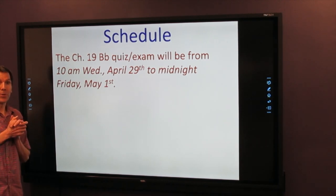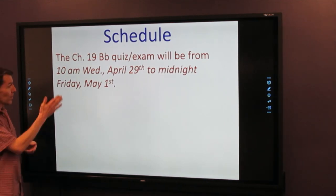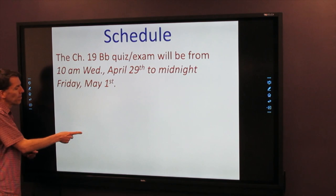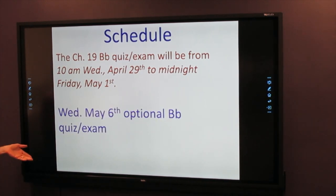You can come to office hours on Thursday evening at 7, Friday morning at 9, and that's the last regular day of the semester. No true final this semester, but on Wednesday, May 6th, there will be an optional Blackboard quiz slash exam. It will just basically run for 24 hours on May 6th, and it's entirely optional.